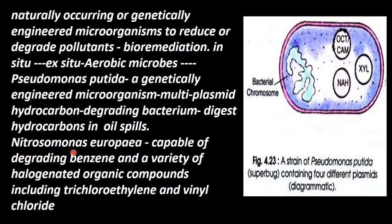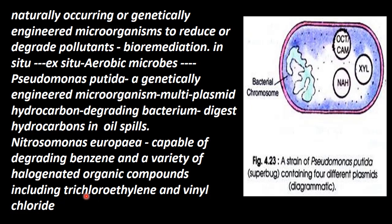Nitrosomonas europaea — this is capable of degrading benzene and a variety of halogenated organic compounds, including trichloroethylene and vinyl chloride, which are chemicals in daily usage. That is why Nitrosomonas europaea is very much useful.